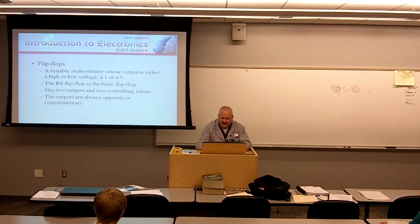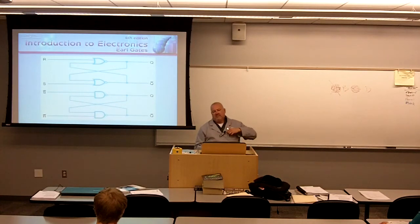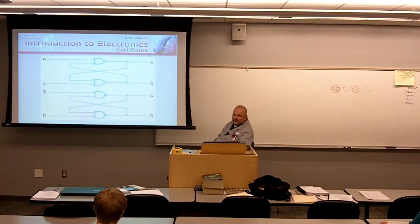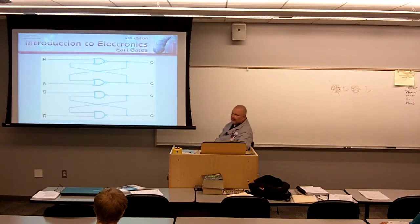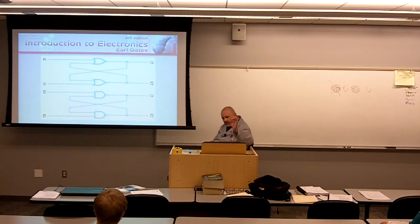The RS flip-flop is the basic flip-flop. It has two outputs and two controlling inputs. The outputs are always opposite or complementary. This is an example of a set-reset flip-flop made out of NOR gates. The way that this works — I want you to understand from a functional block what this thing is used for. It's real simple: we're either going to set this device or we're going to reset this device. We're either going to hold a 1 here or reset it back to a 0 — holding either a state on or a state low.